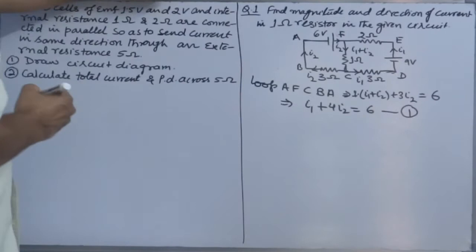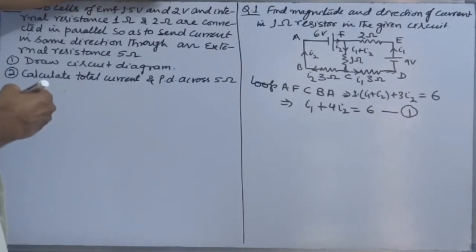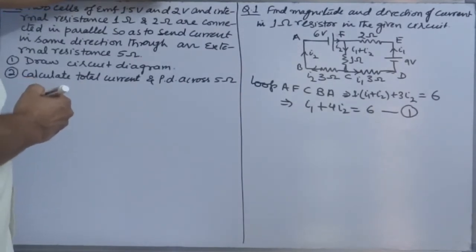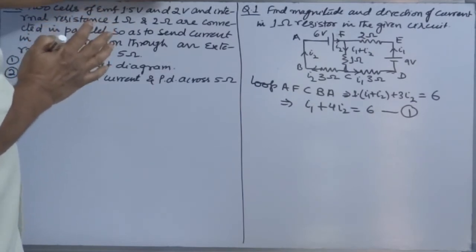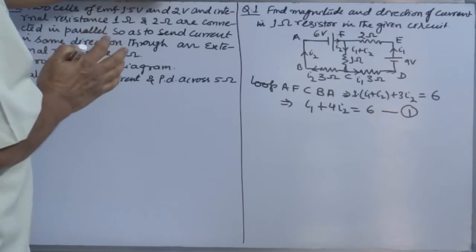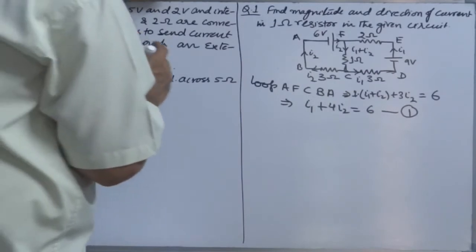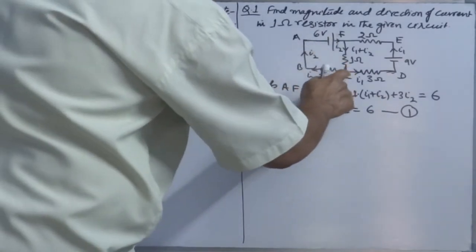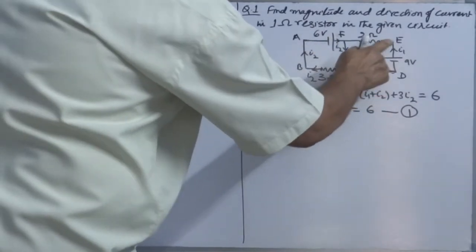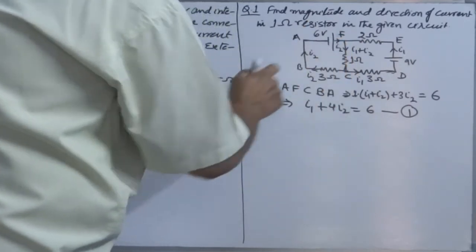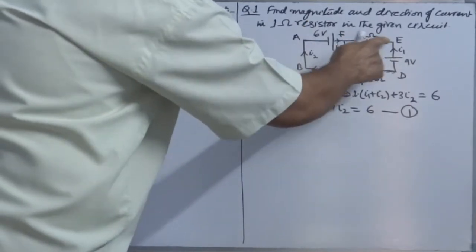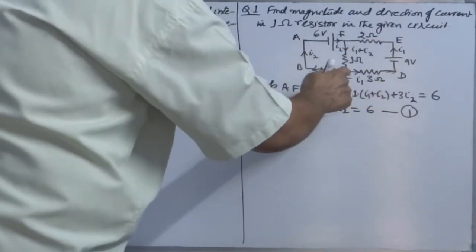One algebraic equation is formed. For the second loop, you can choose CDEFC or CFEDC — direction doesn't matter. You can move in a loop in any direction as per your choice; it won't make any difference in the formation of the equation, as long as you apply all rules and sign conventions correctly.